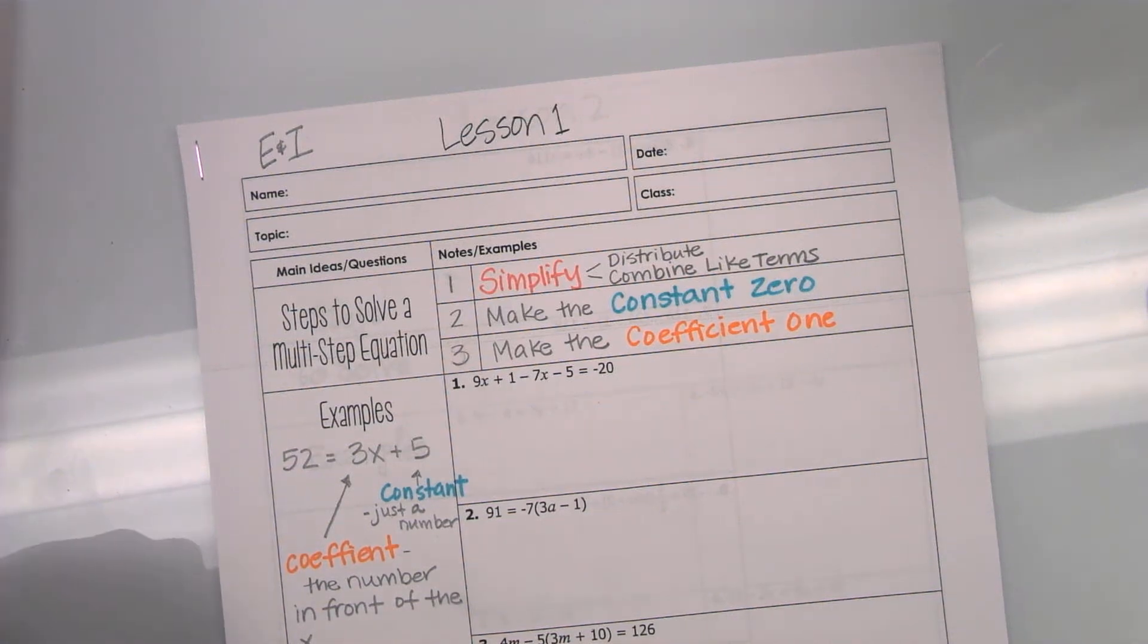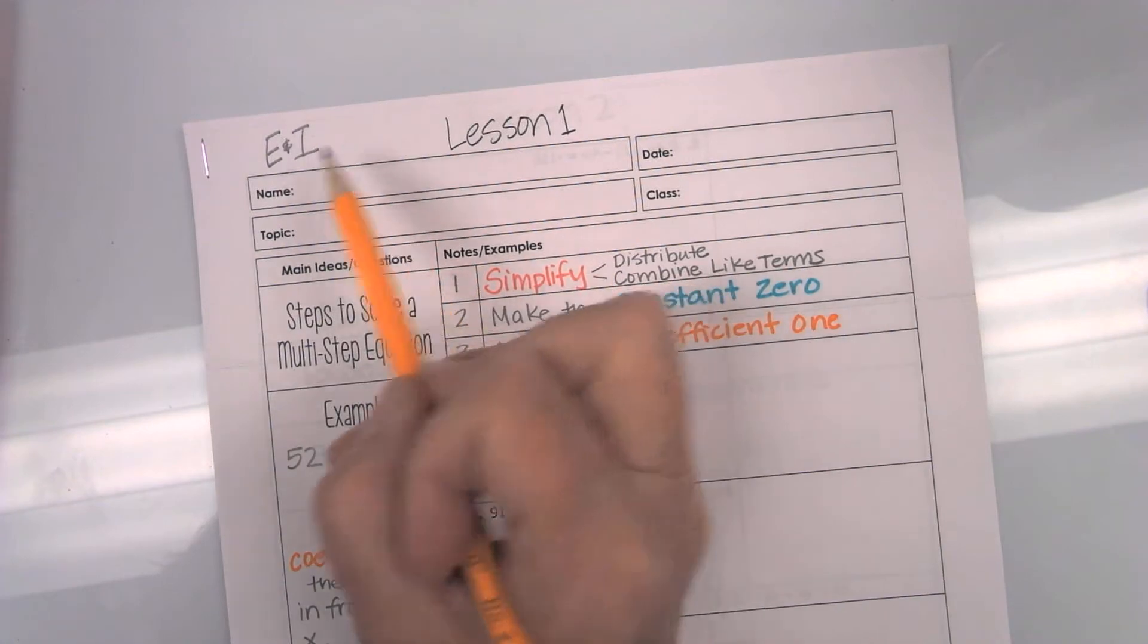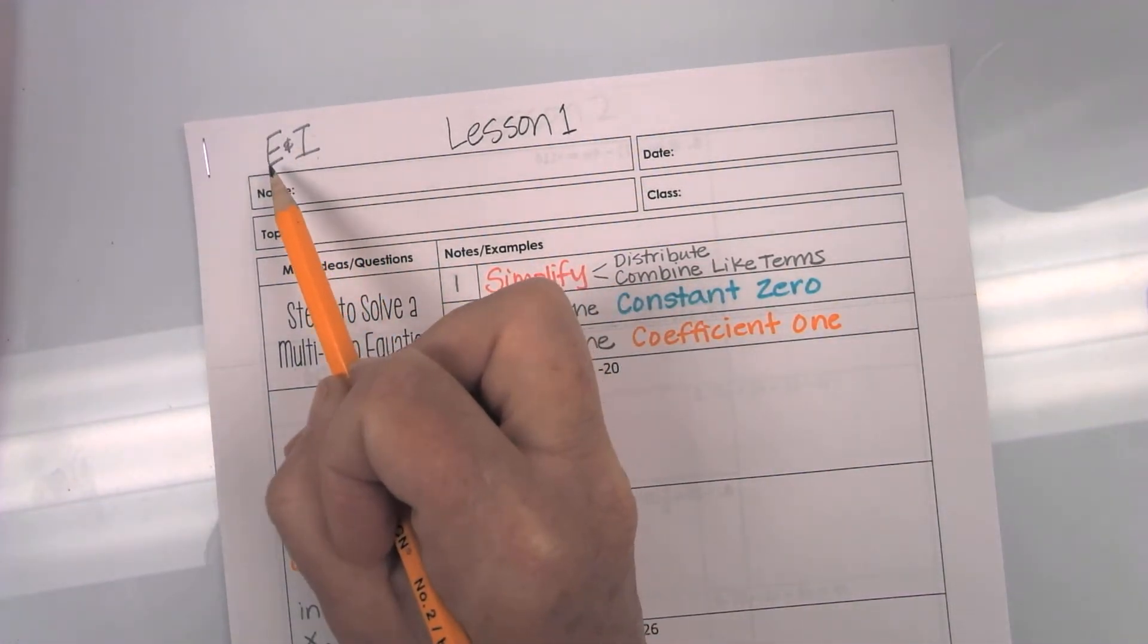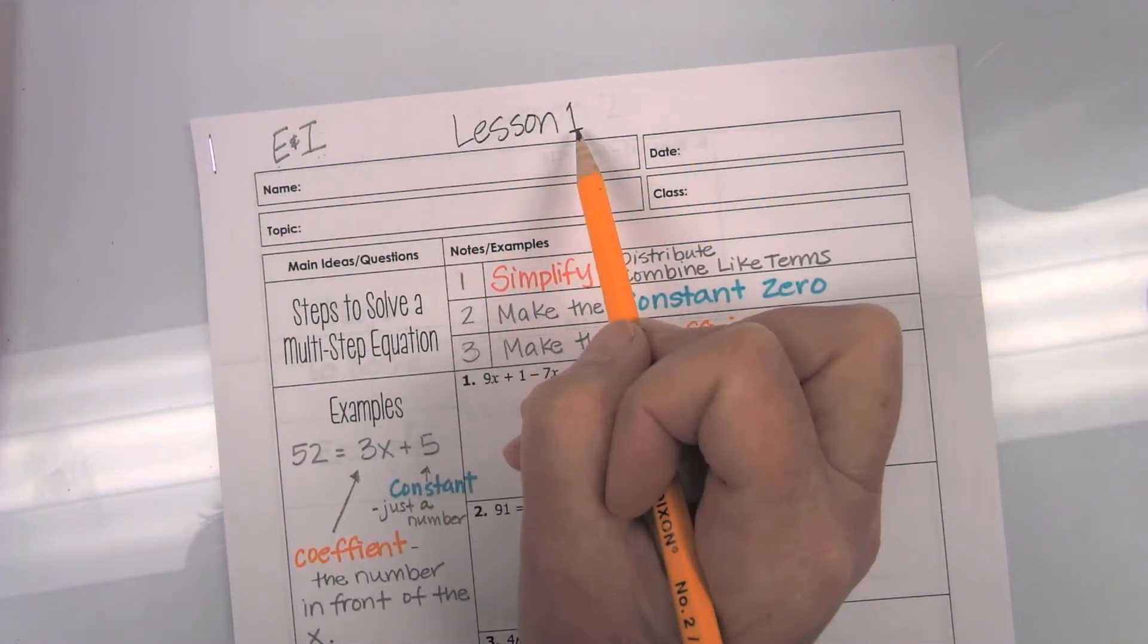Good morning, mathematicians. Today, you are starting a new unit. It's Equations and Inequalities, so I did name it EI. This is lesson one.